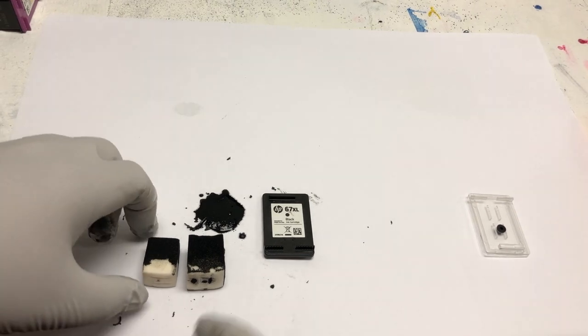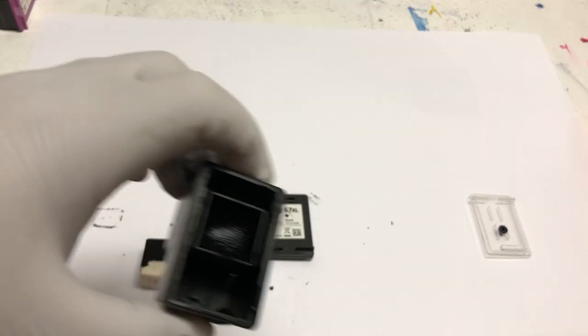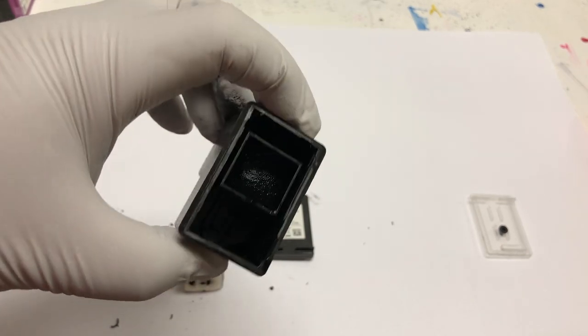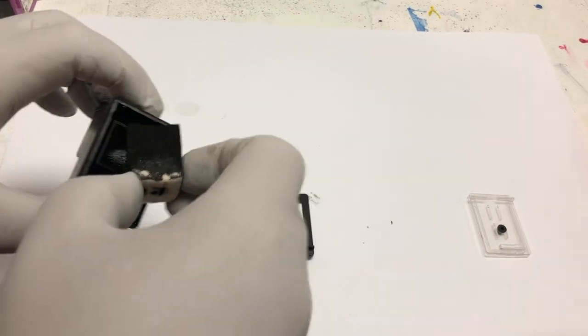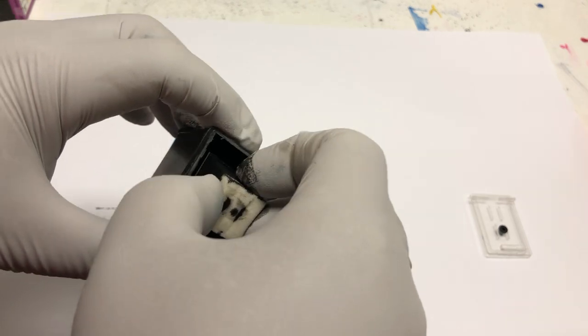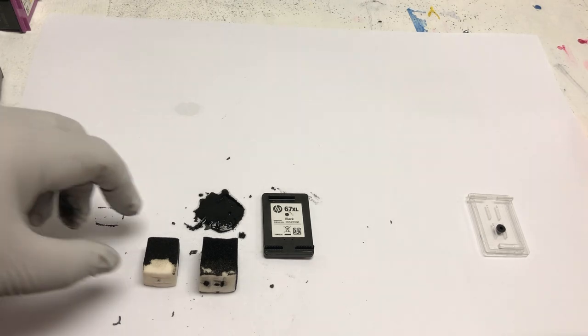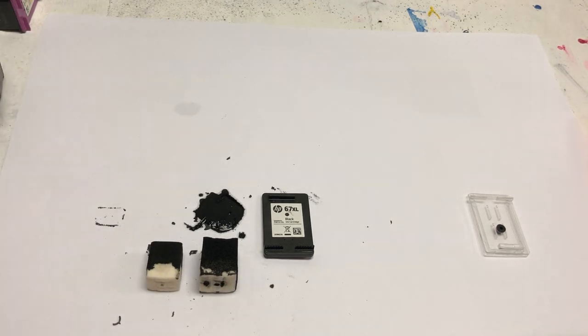Let's take a look at the 67 XL. You can see HP gave you a lot more ink in the XL and the sponge is a little bit more full and the sponge actually is a little bit larger than the regular sponge. You get a comparison of the regular sponge and the XL sponge.